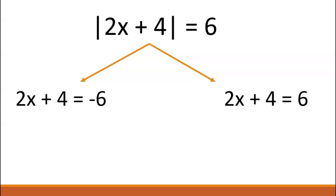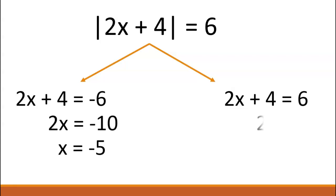We find that the absolute value of 2x plus four equals six is true when x is equal to negative five, and when x is equal to one.